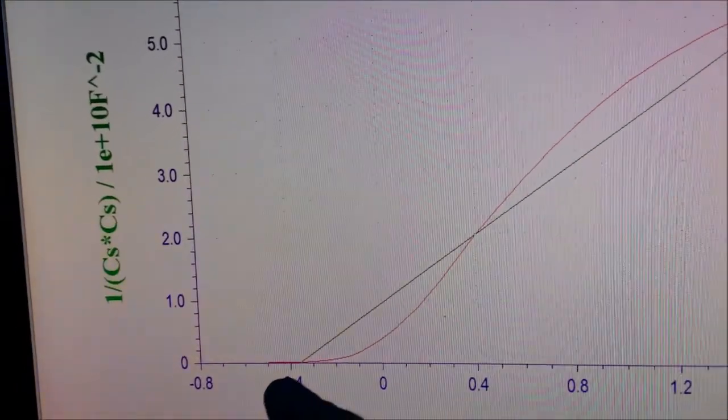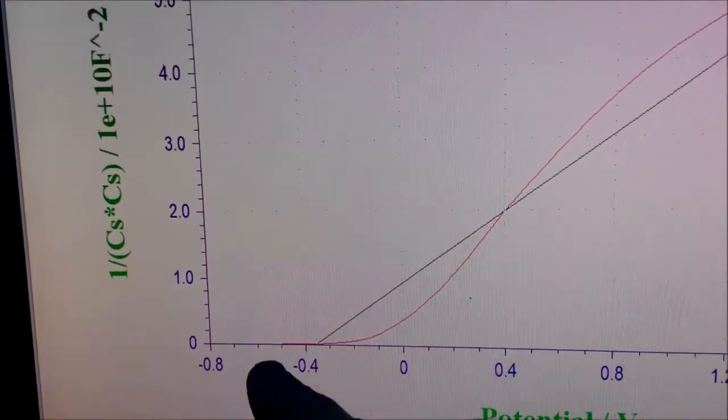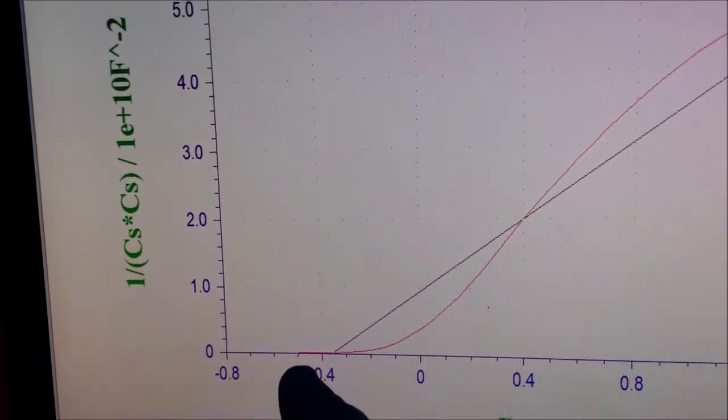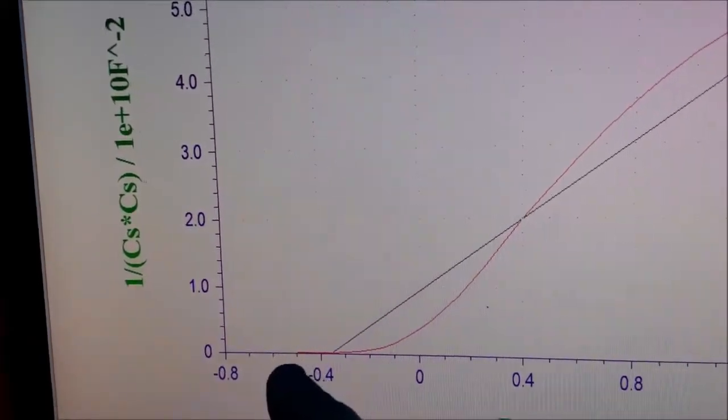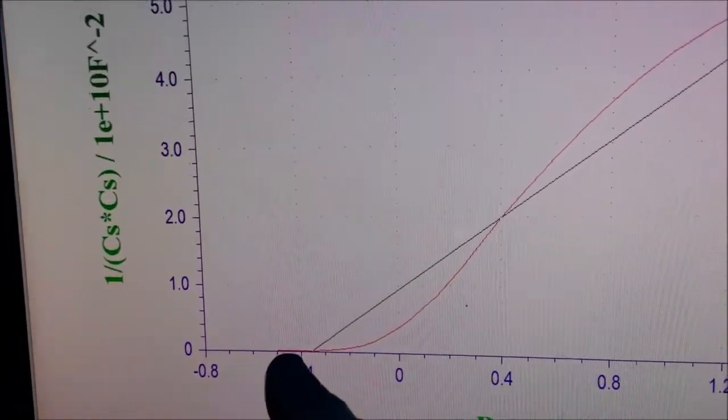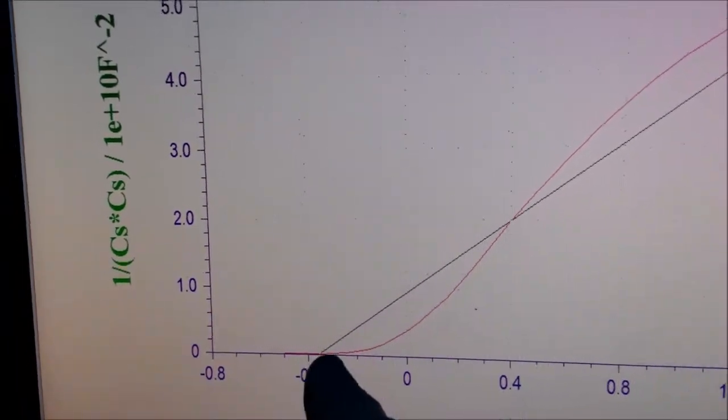You can see this region where the value of 1/Cs² is almost zero and it lies near the x-axis. This region is known as the accumulation region.